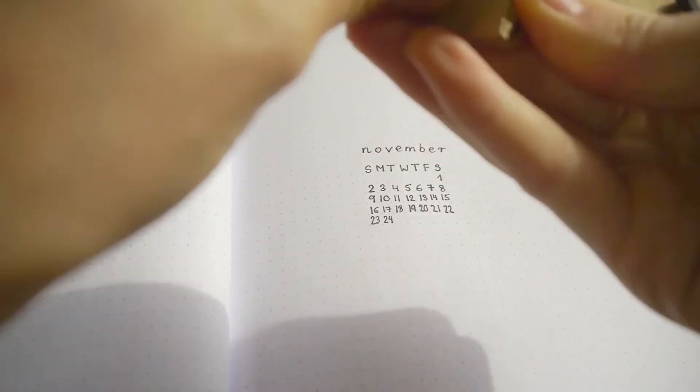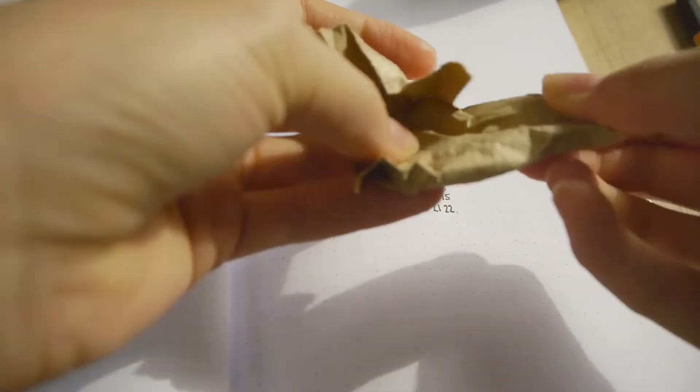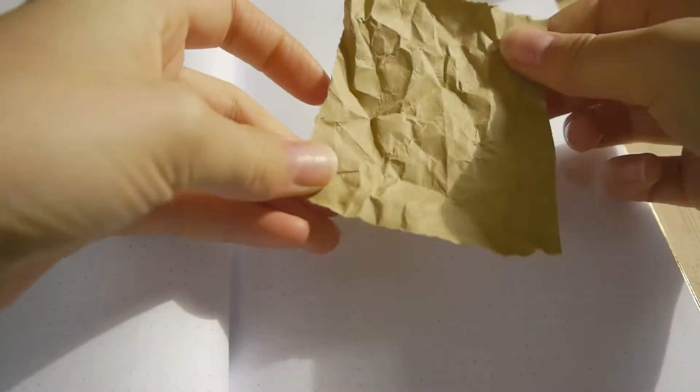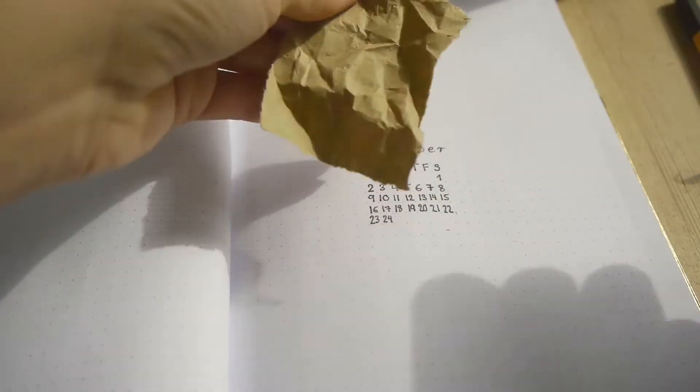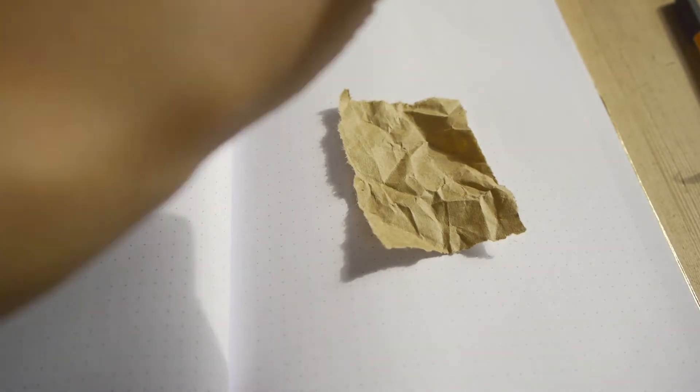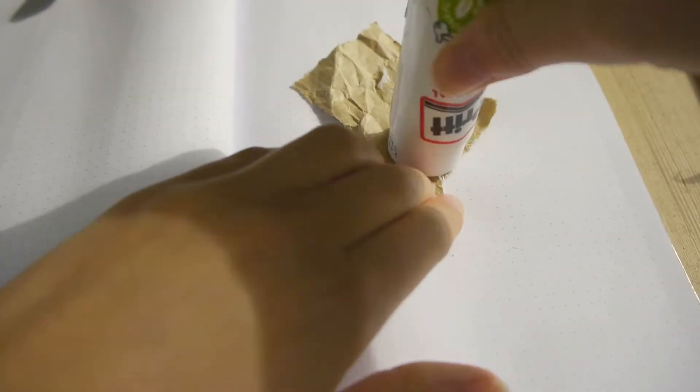It's kind of embarrassing to admit, but I'm actually starting this video with covering up a mistake. I wrote down a completely wrong month at a glance, so instead of using gallons of whiteout to hide it, I'll cover up this bit with some brown paper, which I'll crumple to get some nice texture.